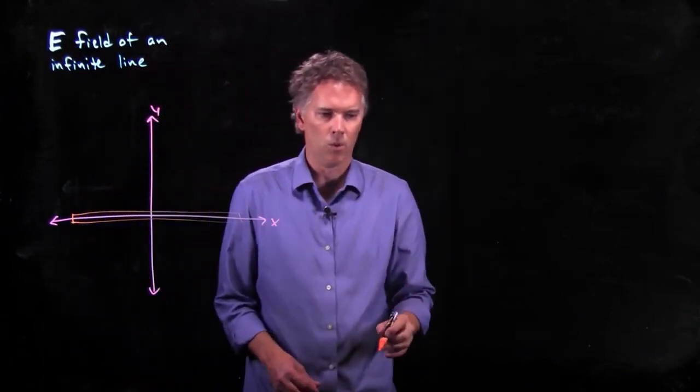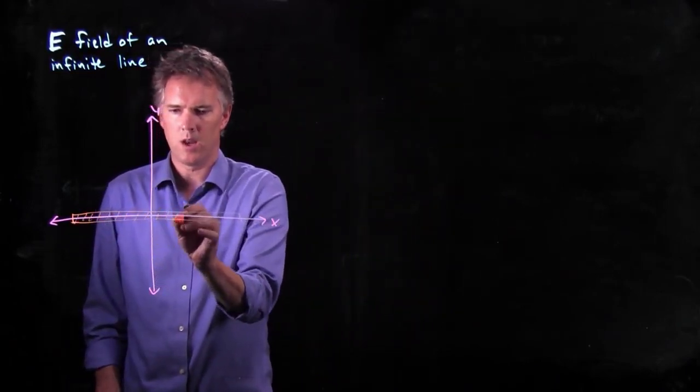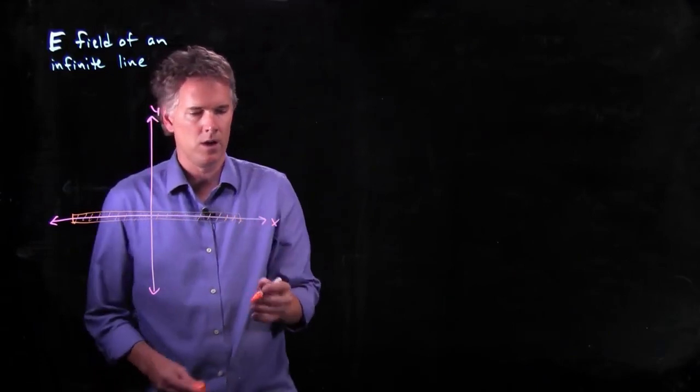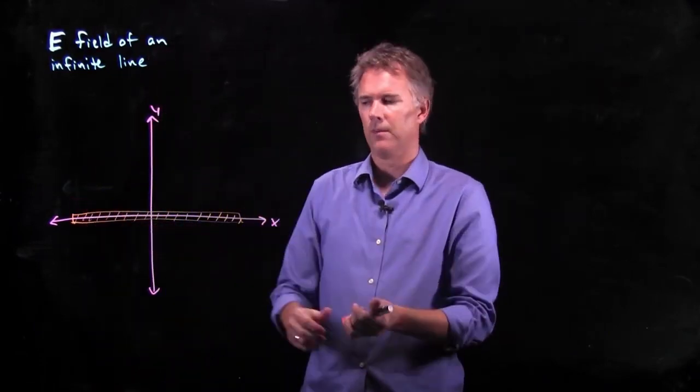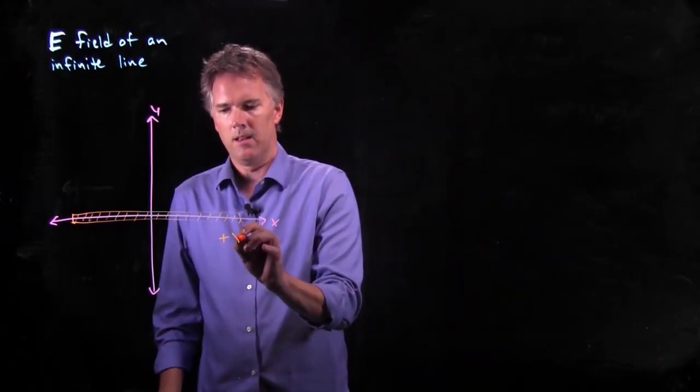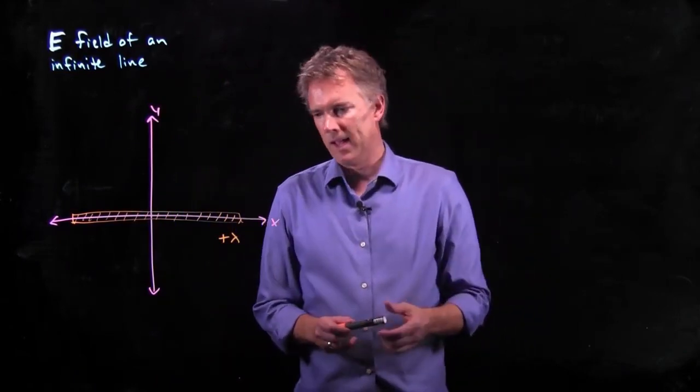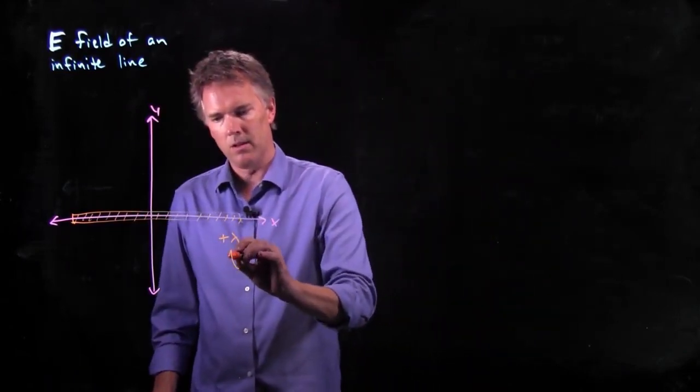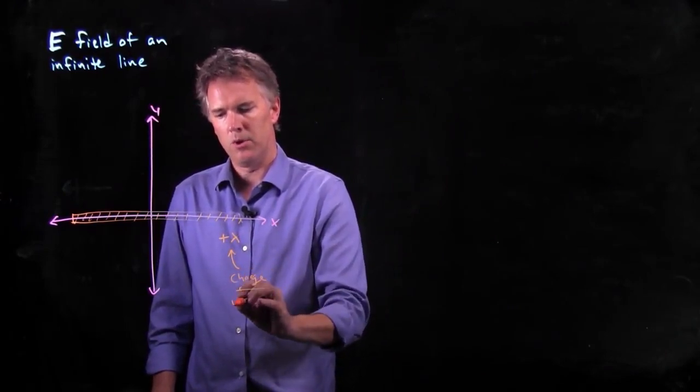And we'll make it orange. So this is an infinite line of charge, even though I did not draw it infinitely long. Just pretend that that charge keeps going out in either direction. And we're going to give that line a charge positive lambda. So what is lambda? Lambda is charge per unit length.